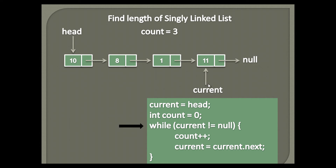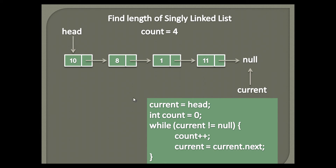It checks the while loop condition. The current node points to the fourth node, which is not null. Therefore it again executes the statements in the while loop. Count gets incremented by one and becomes four, because current is not null, and signifies the list has four nodes. The current node now traverses to current's next node — the element next to the fourth node is null. This signifies that the list has reached its end and there are no more elements to traverse. Now when it checks the while loop condition, the current node points to null, therefore the while loop condition fails and the loop terminates. Thus, the final count value represents the size of the linked list, that is four.